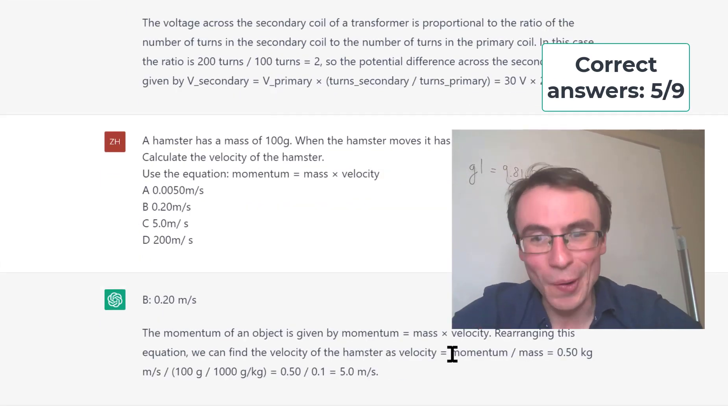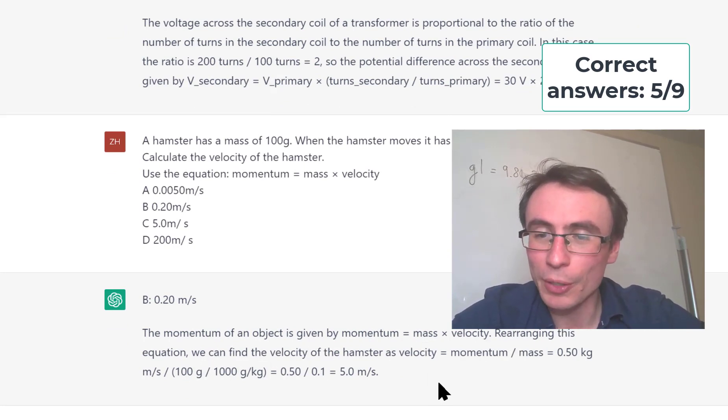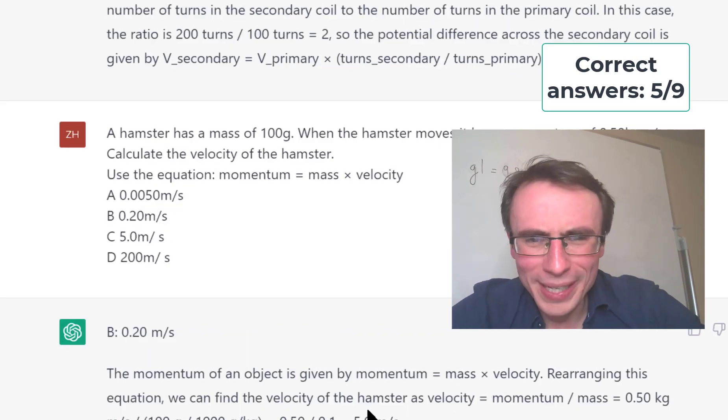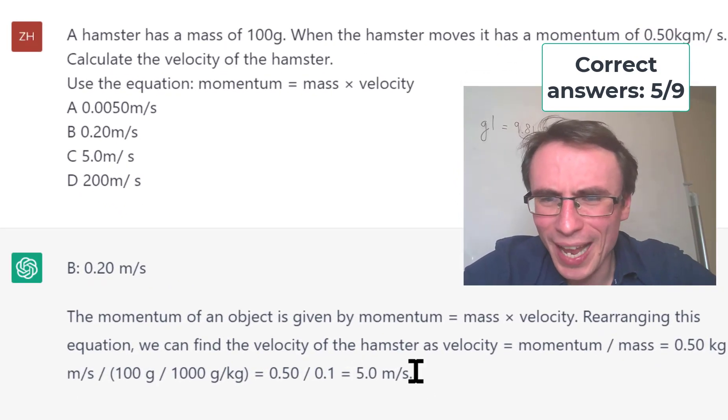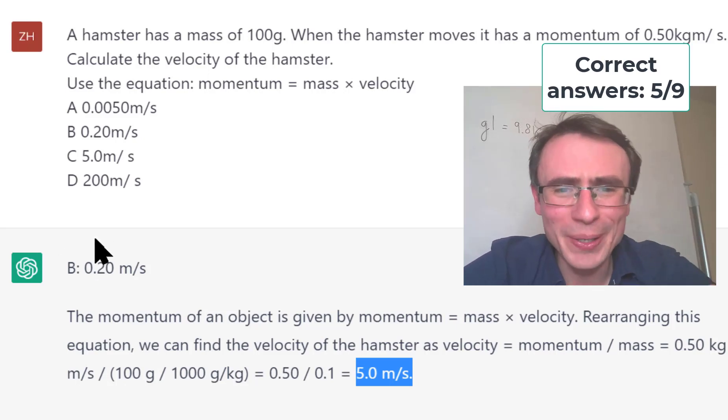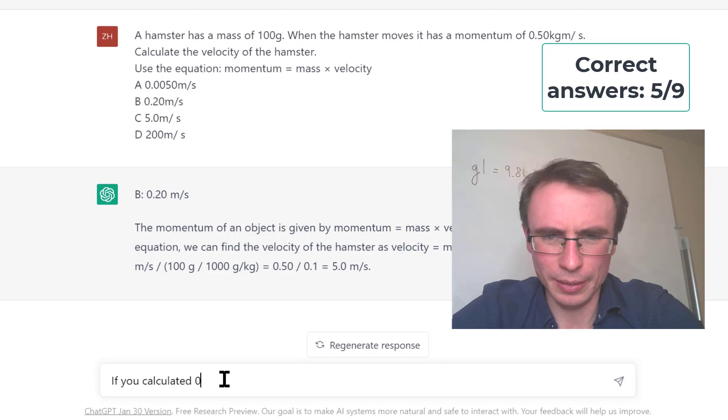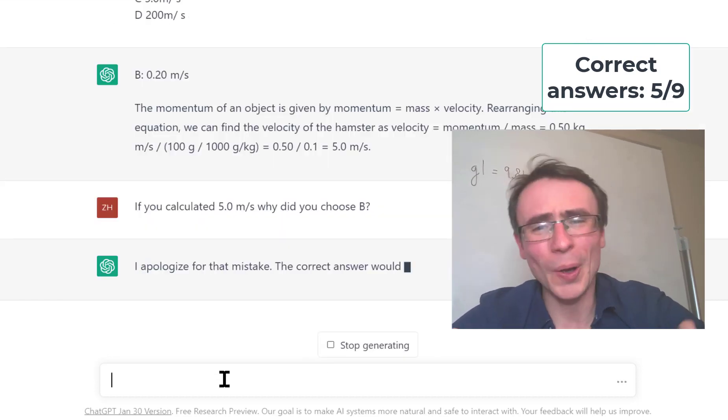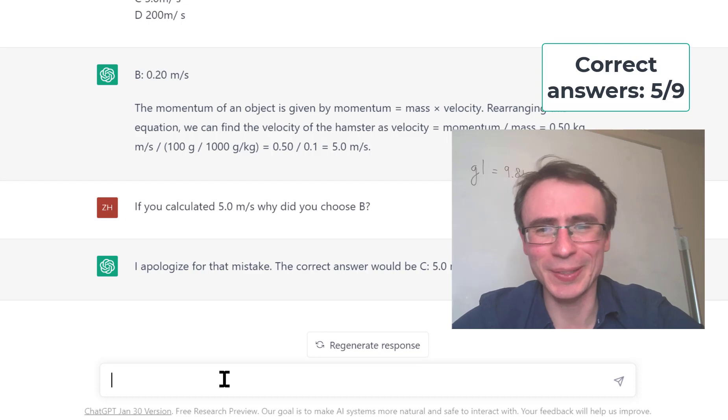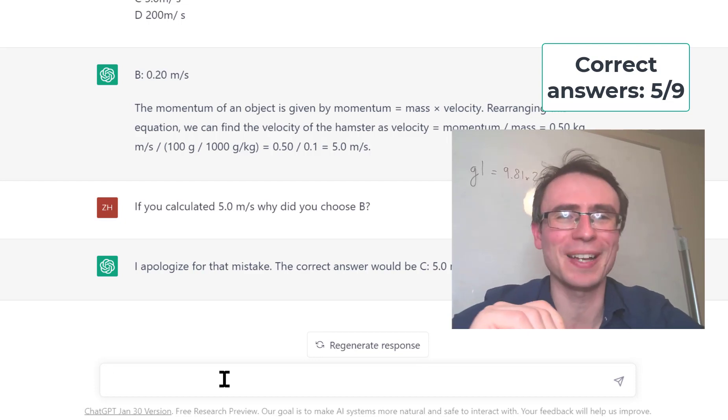It's starting to do this okay by giving us the formula. So rearranging the equation, we can find the velocity of the hamster as the momentum divided by the mass, which is correct. Wait, it's actually calculated the correct answer, but it's given us the wrong numerical letter. How bizarre. Shall we ask it? If you calculated 5 meters per second, why did you choose B? Let's see if it corrects itself. It's even apologized for the mistake. The correct answer would be C, 5 meters per second.